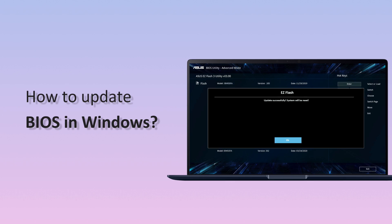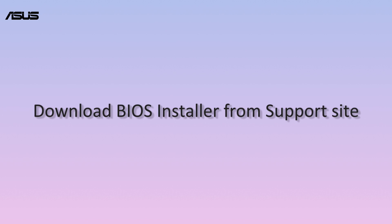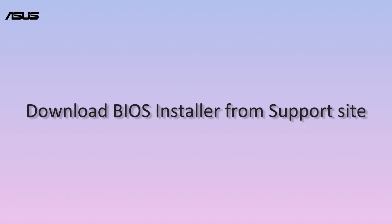How to update BIOS in Windows. A BIOS update can resolve current software issues, update security patches, and improve system stability. There are two ways to update BIOS in Windows: with the BIOS Installer and WinFlash.